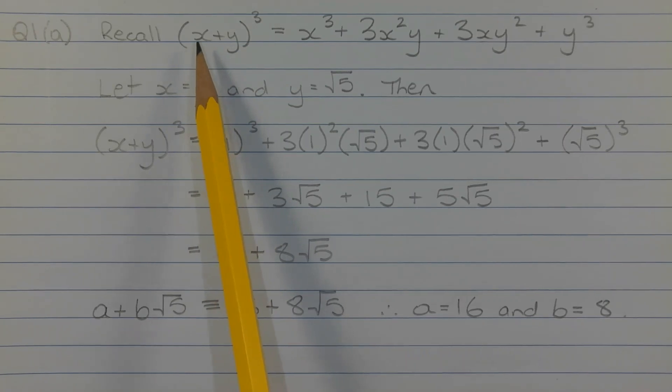Recall that the expansion of x plus y in brackets to the power of 3 using the binomial theorem is x cubed plus 3 times x squared y plus 3 times x y squared plus y cubed.